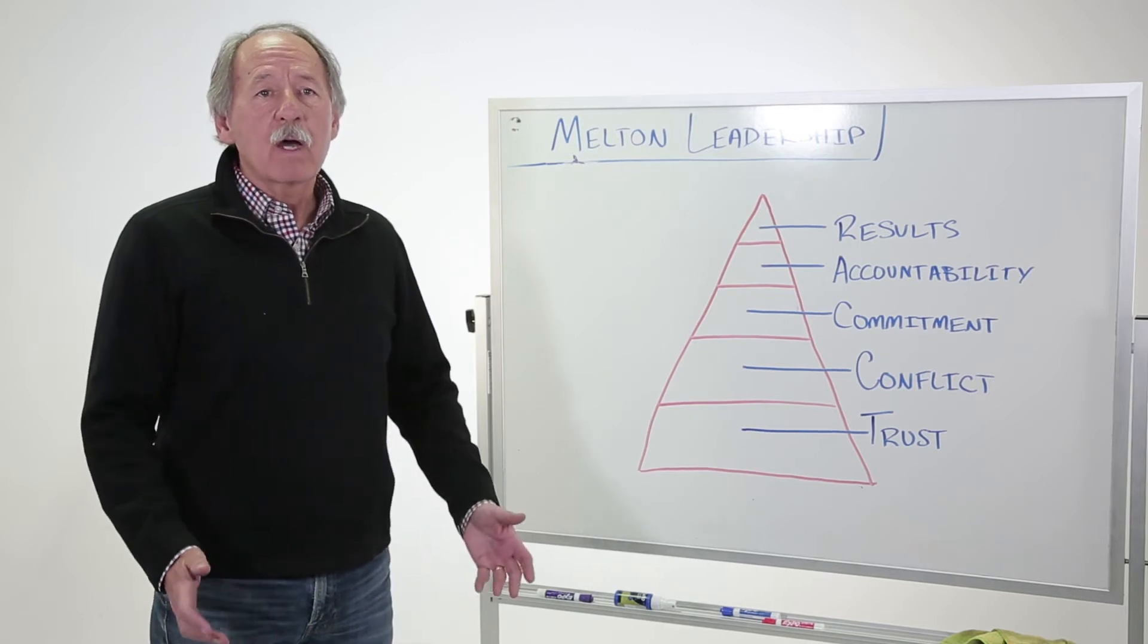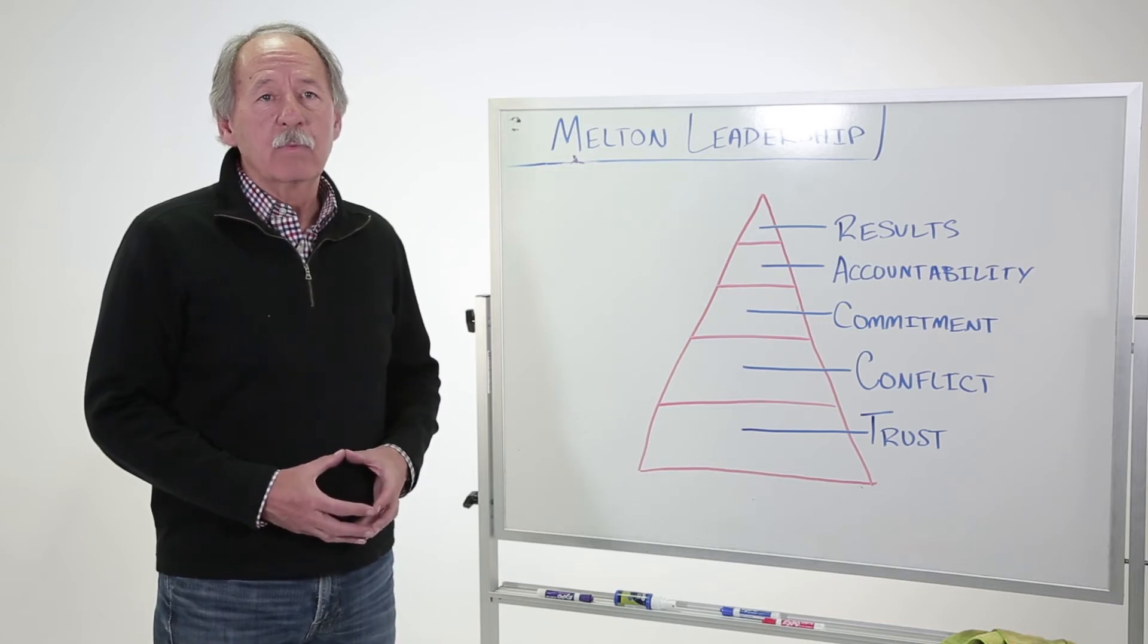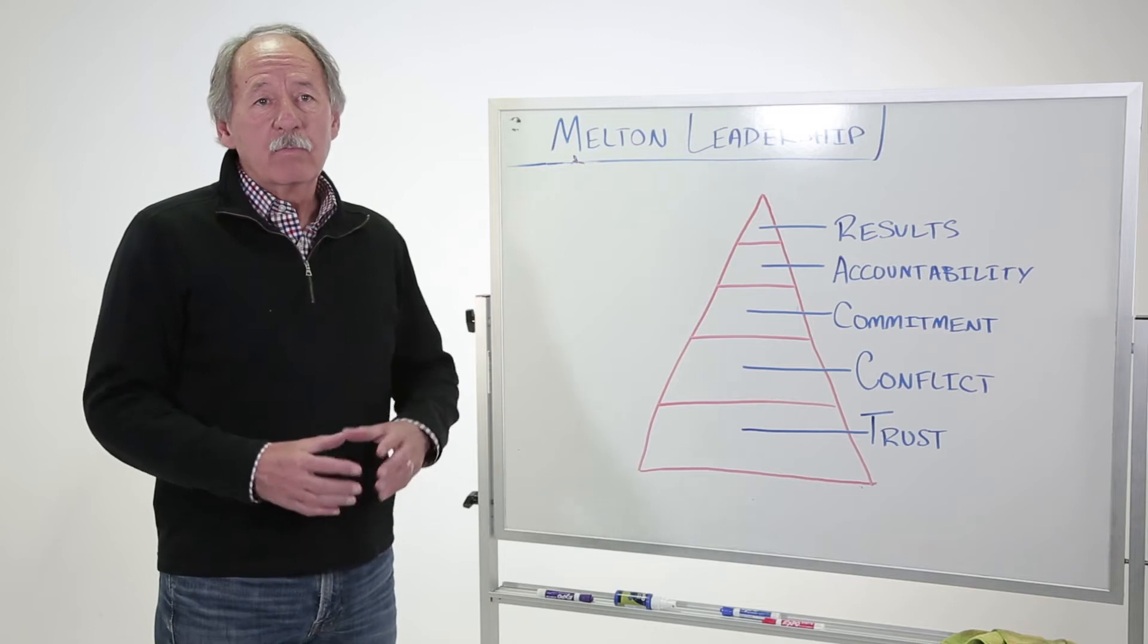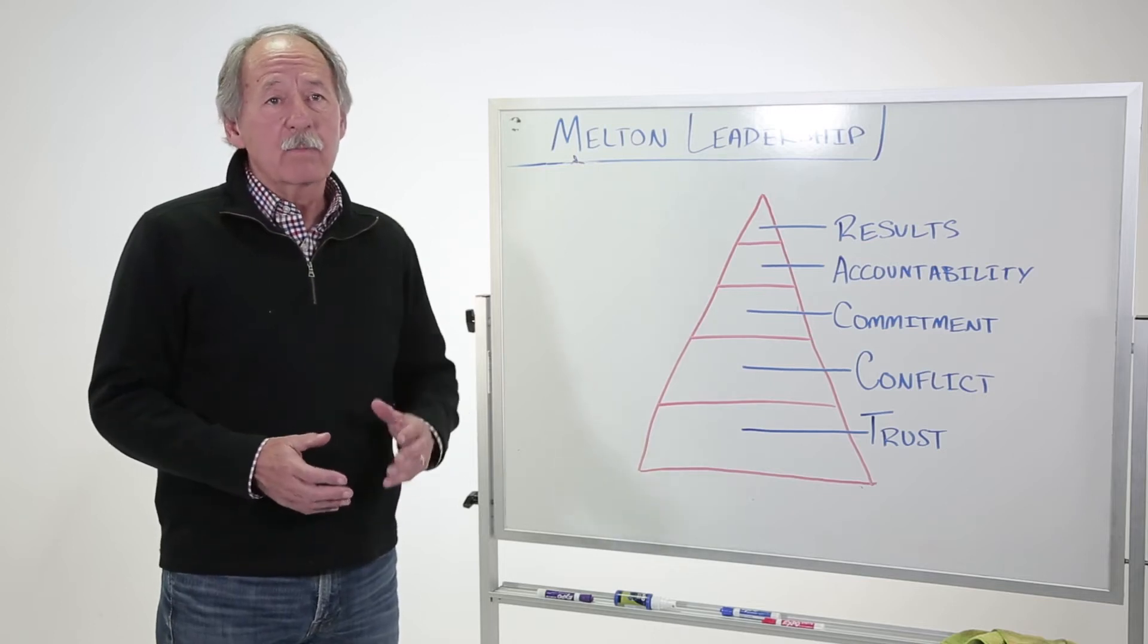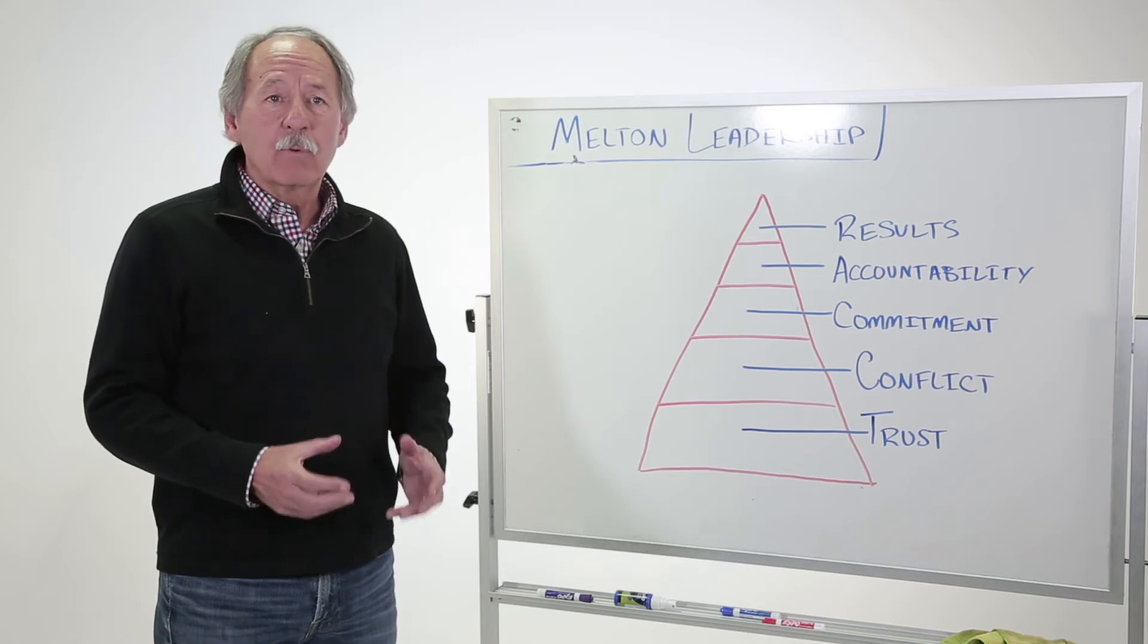The primary model that I use today is based on Patrick Lencioni's book, Five Dysfunctions of a Team. So the big idea is that we're talking about an organization as a team. And by the way, that's an important distinction.